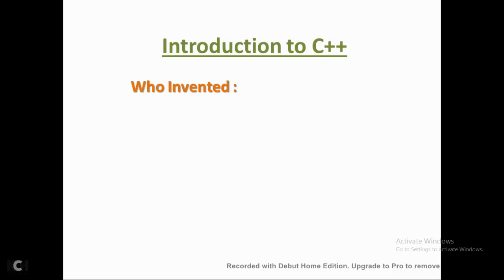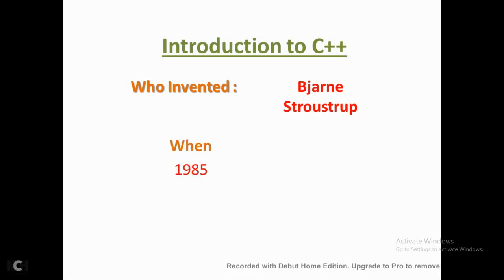First, we'll see who invented C++. It was Bjarne Stroustrup — a scientist and programmer. He was interested in this and invented C++. Prior to this, C language was there. After C language, C++ was invented, so you can say C++ is a superset of C. The process started from the year 1979 because C language was invented in 1972 and after that some enhancements were needed.